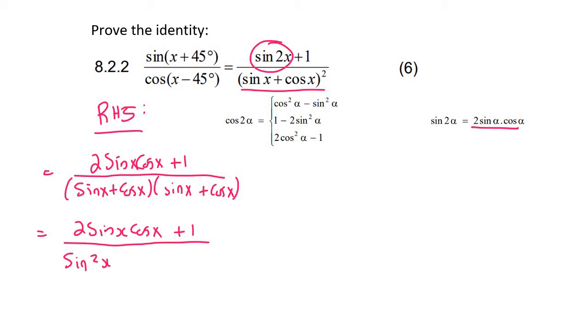So it'll give us sin squared x plus, eventually this will give you 2 sin x cos x, and then plus cos squared x. This is actually something very interesting that's happening now, because what we're going to notice at the bottom is that that's just going to equal 1.